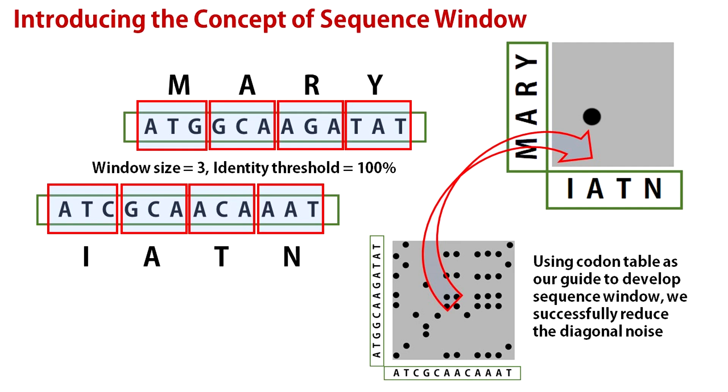So the identity threshold in this case is 100%. Now see the original dot plot has reduced to a single dot along the diagonal. So you see how using the concept of window we can reduce the off-diagonal noise in the dot plot.